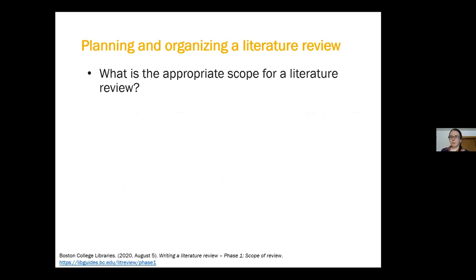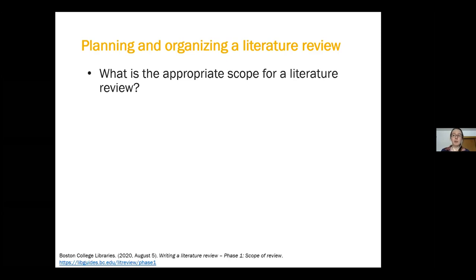Whenever we're writing a lit review — whether it's for a research article, a conference paper, a book chapter, or a literature review assignment in one of our classes — we have to think about what's the appropriate scope. There's no one-size-fits-all answer. The scope is going to reflect your discipline, the journal or location where you're trying to publish, as well as the type of publication you're creating. The scope for a lit review within a dissertation might look very different than within a research article. Research articles, depending on the discipline, might only be 15 to 20 pages, whereas dissertations can be upwards of 100 or 200.